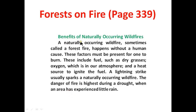The next paragraph starts with the headline 'Benefits of Naturally Occurring Wildfires.' A naturally occurring wildfire, sometimes called a forest fire, happens without a human cause. Three factors must be present for one to burn: fuel such as dry grasses, oxygen which is in our atmosphere, and a heat source to ignite the fuel. A lightning strike usually sparks a naturally occurring wildfire.